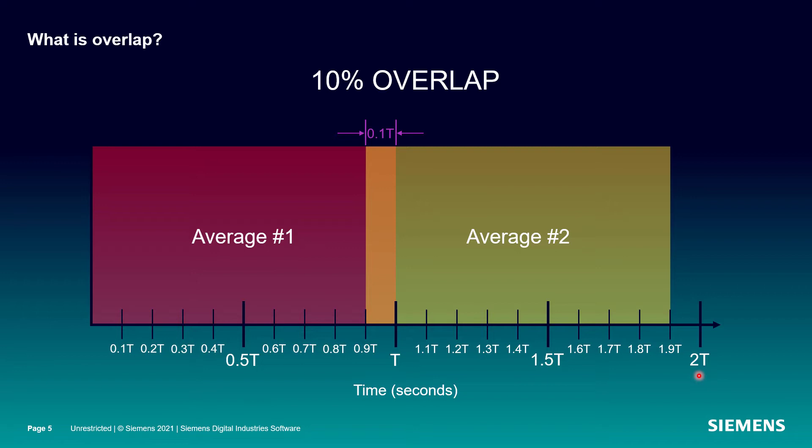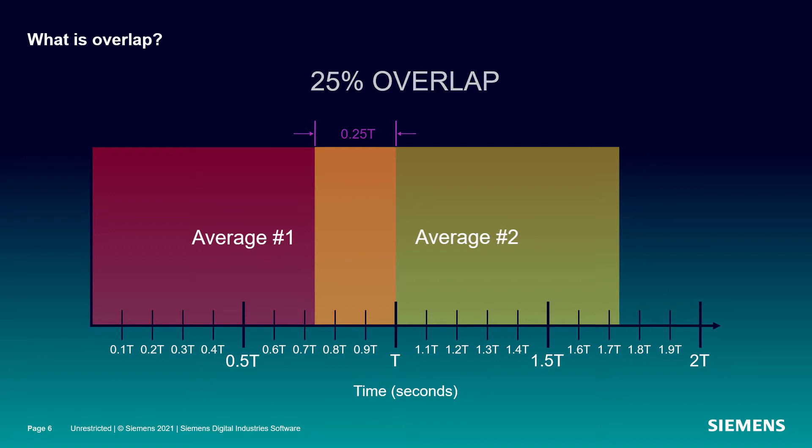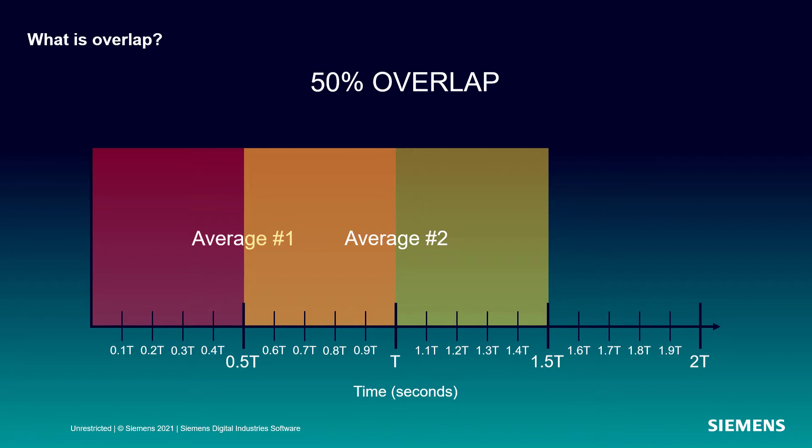But I could also start average two before average one has finished. In this case, I slide it back to 0.9T and we would call this 10% overlap because there is 0.1T worth of time data that's part of average one and average two. This could also increase to 25% and 50%, et cetera.